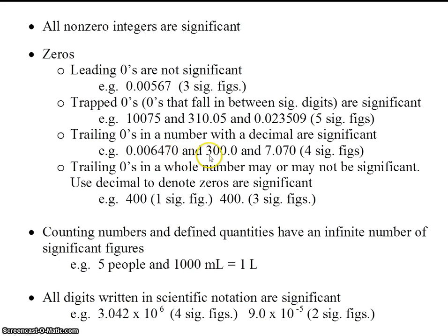This number has 1, 2, 3, 4 sig figs. These are all trailing zeros, and this number has a decimal place. What type of zero is this here? That's right, this is a trapped zero, and remember that trapped zeros are significant. This is a trailing zero, and trailing zeros are significant if the number has a decimal place — and this number does have a decimal place. So this number has 1, 2, 3, 4 significant figures.